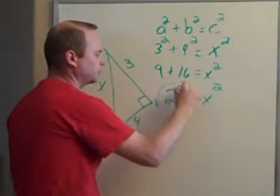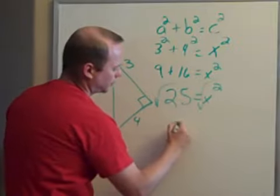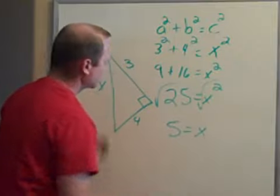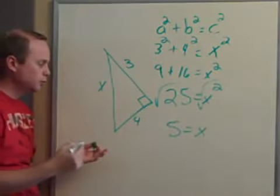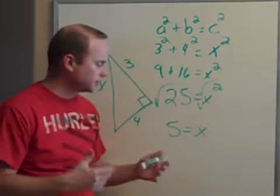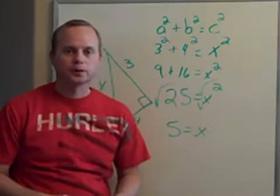In order to solve this one, we can take the square root of both sides. 5 equals x. So my length on this one is 5. 5 units, whatever it is. And if it's centimeters or meters, it would be 5 centimeters or 5 meters, either one.